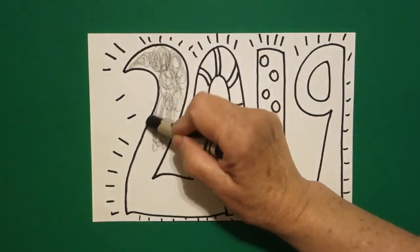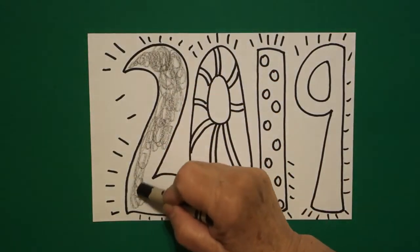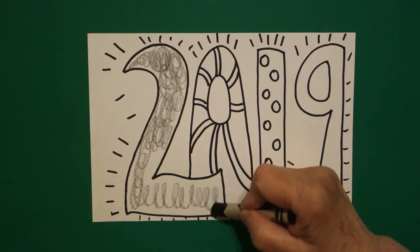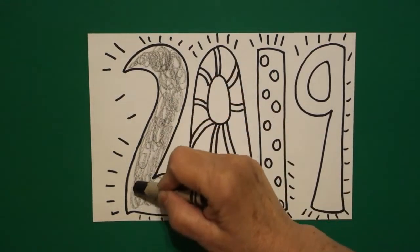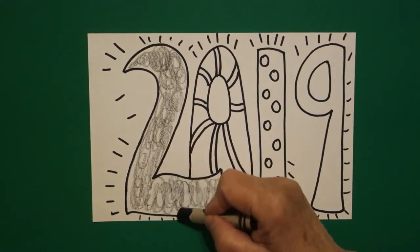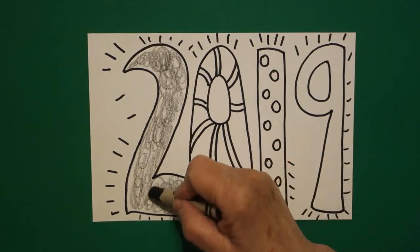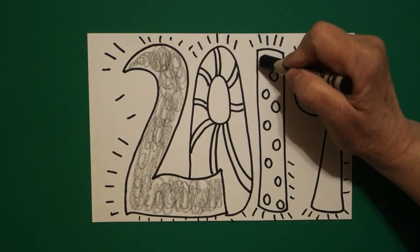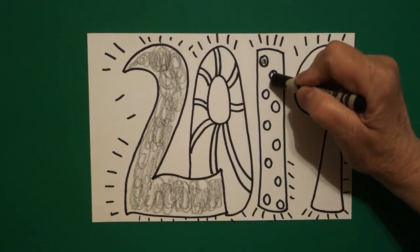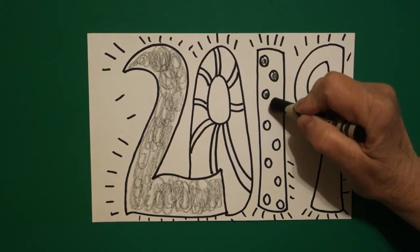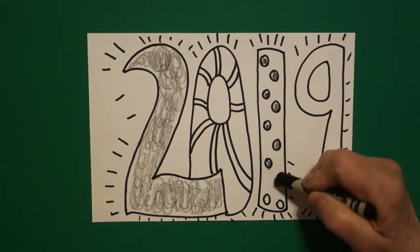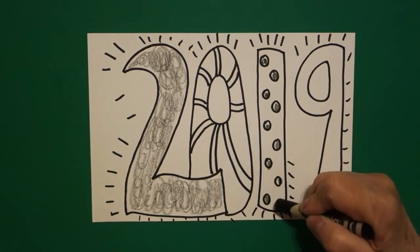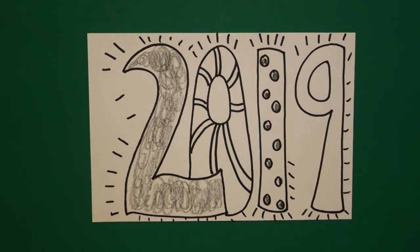So first I took black because that reminds me of tuxedos like evening wear you would wear at New Year's Eve parties. And I colored my first number black. Then I came over and I colored all of my baby circles black. And I used my big crayons because I'm coloring in big spaces.